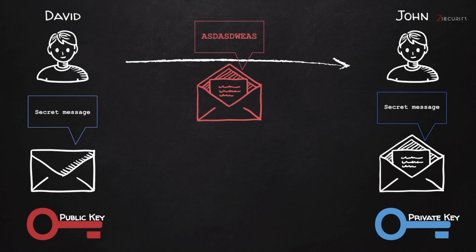There is nothing wrong with making your public key public. The only problem is someone can come in, pretend to be David, use John's public key to encrypt a message, and send it to John. That way, John has no way of knowing whether this message actually came from David or not.